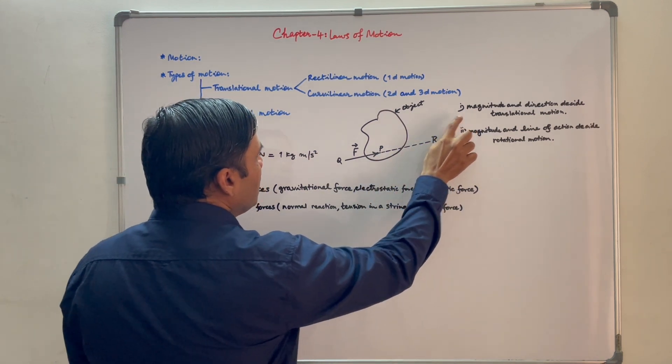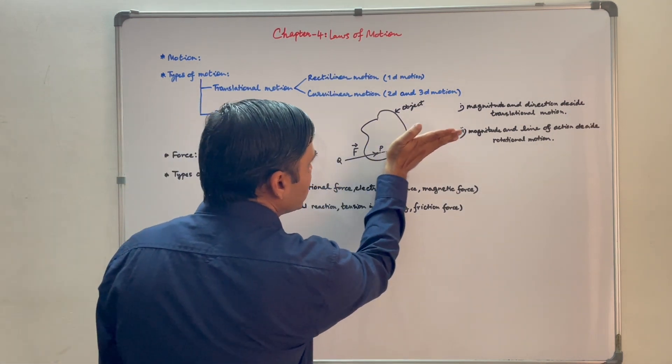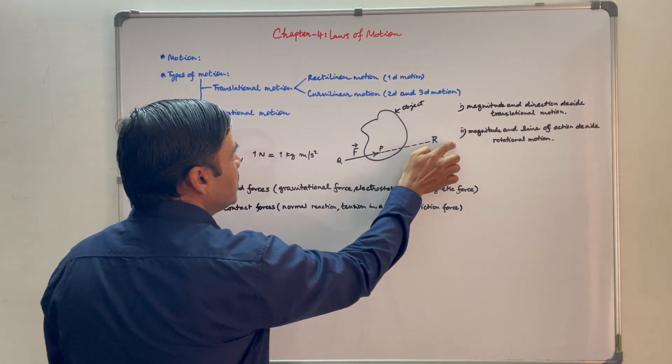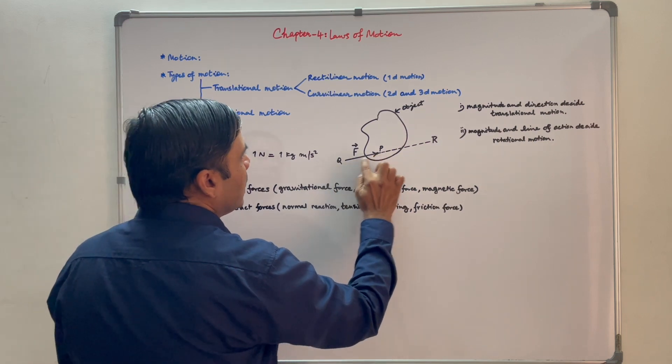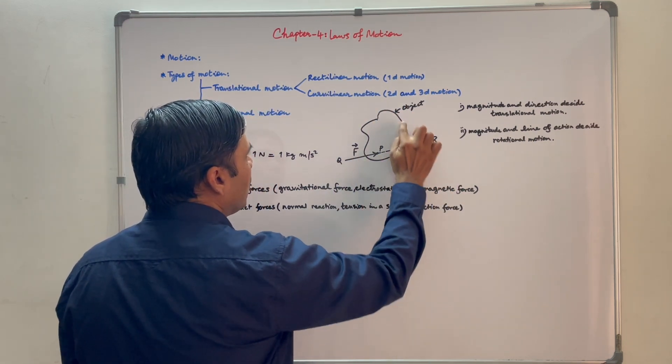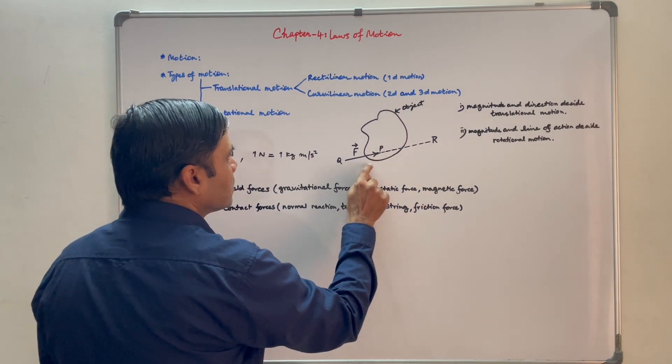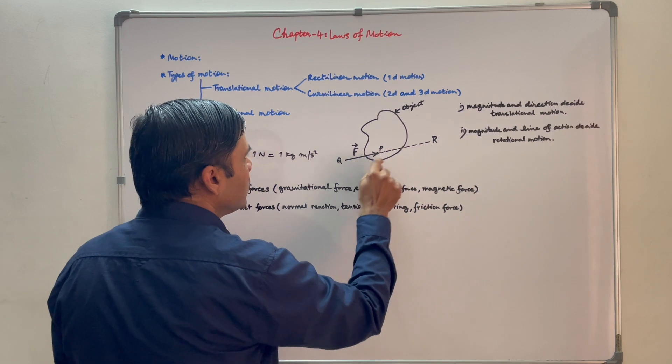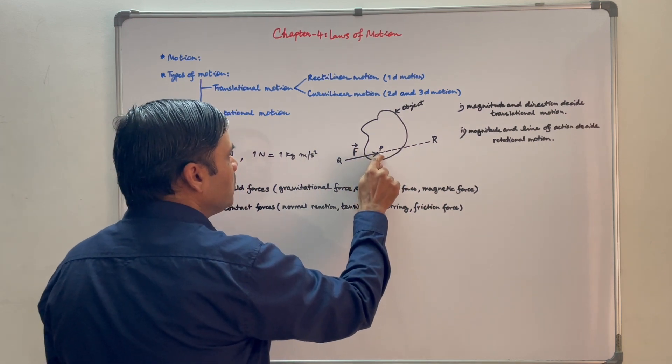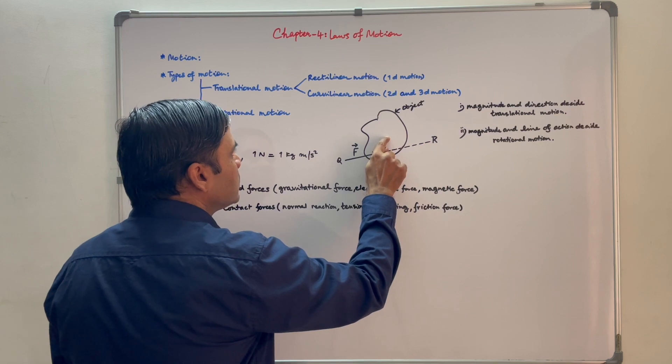Now, point number one. Magnitude and direction decide the translational motion of the object. Point number two. Magnitude and line of action of force decide the rotational motion of the object. So you can sense that this object will have translational motion as well as rotational motion. Rotational motion because line of action of force is not passing through center of mass.